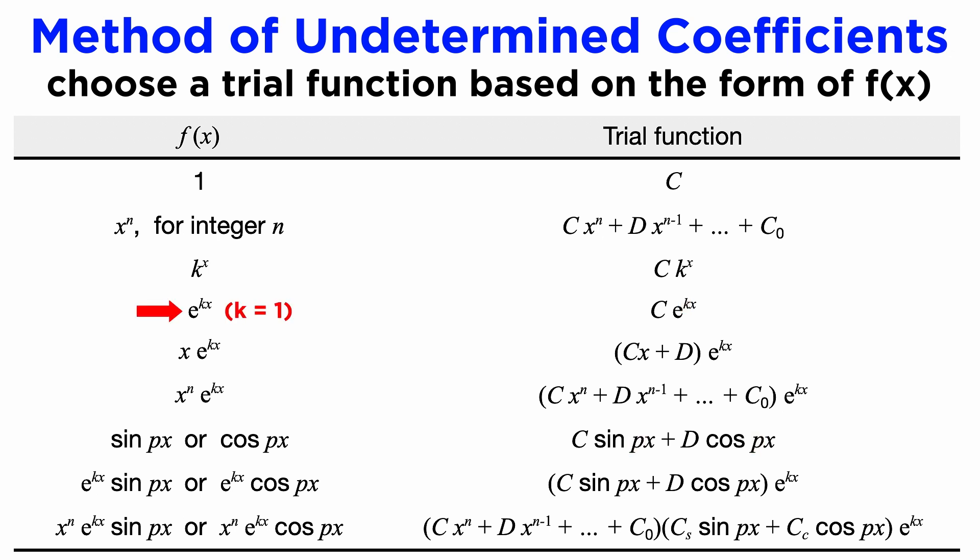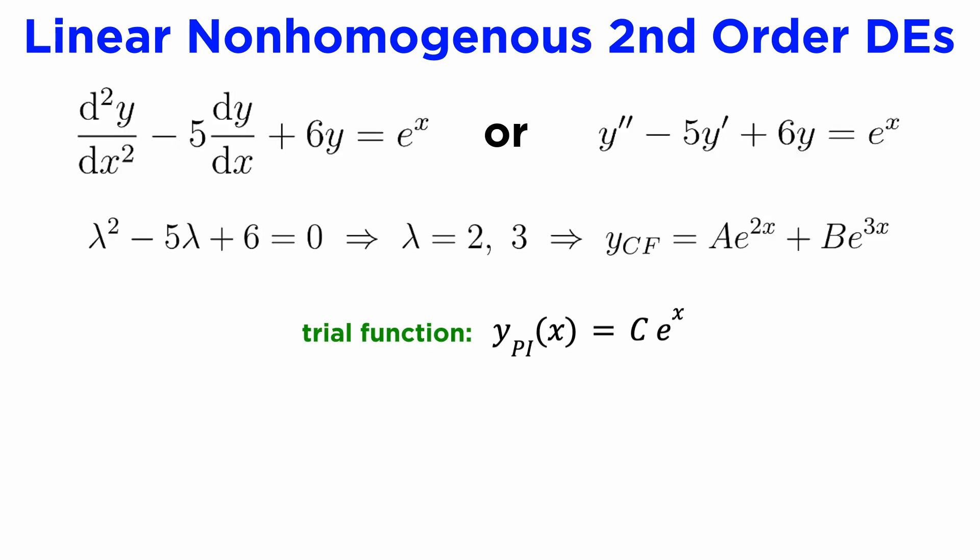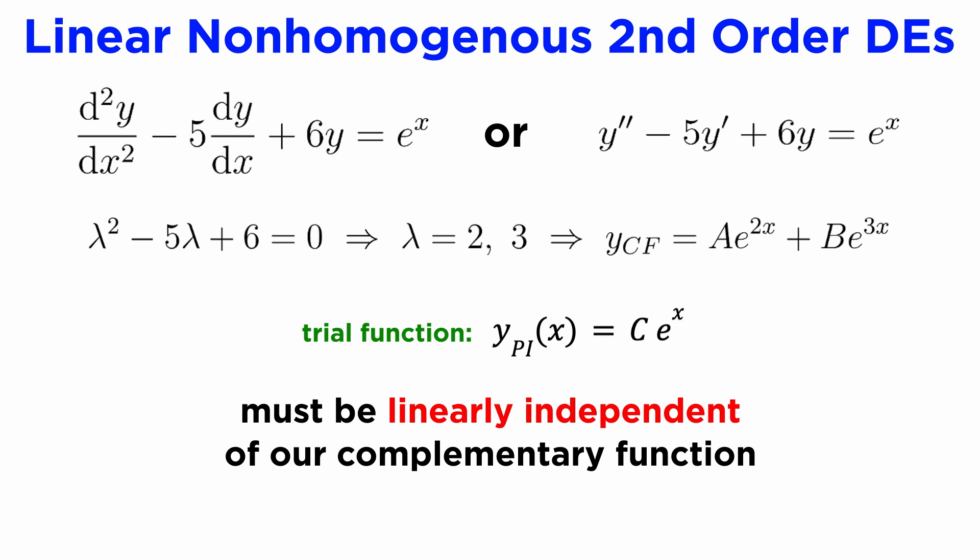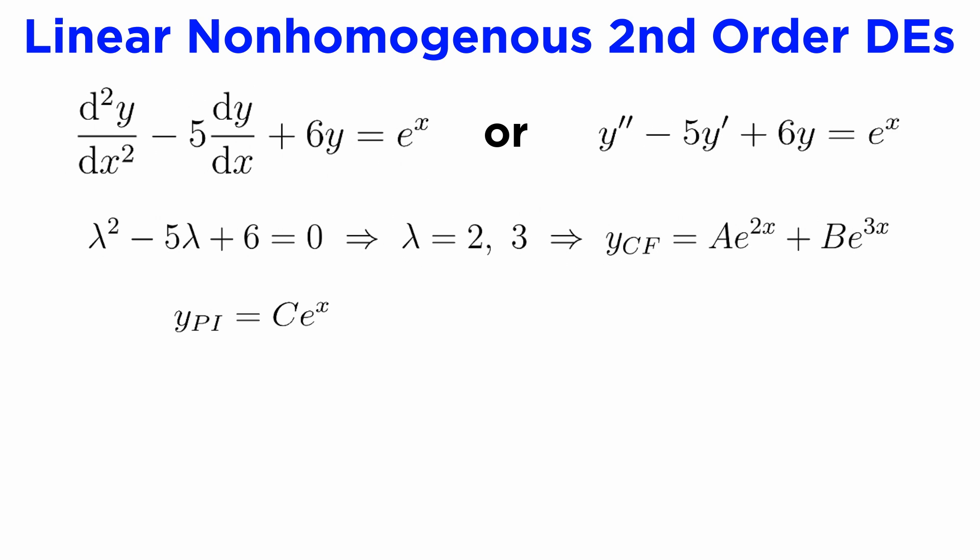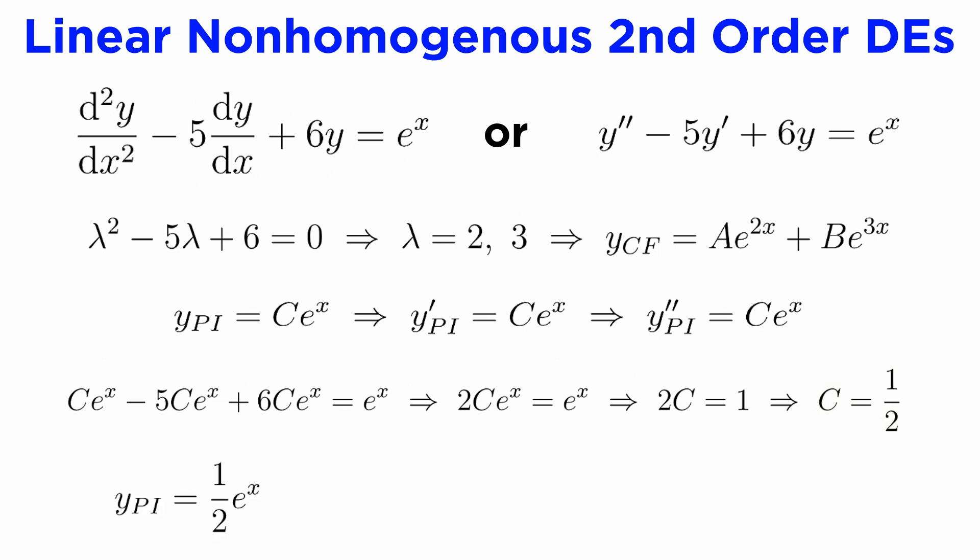In our example, f is e^x, so we will use the trial function Ce^x, where C is an undetermined coefficient. We must now check that our trial function, which contains e^x, is linearly independent of our complementary function, which contains e^(2x) and e^(3x) as its basis solutions. Since e^x does not appear in either of the basis functions, our trial function is indeed linearly independent. In order to find the value of the undetermined coefficient C, we need to substitute the trial function into our DE, so we need to find the first and second derivatives of our trial function. Subbing these into our DE allows us to equate the coefficients of e^x to get C = 1/2. So our particular integral is (1/2)e^x. By superposition, our general solution will be the sum of the complementary solution and the particular integral, which gives us this as our final answer.